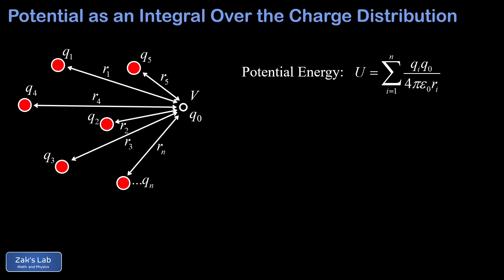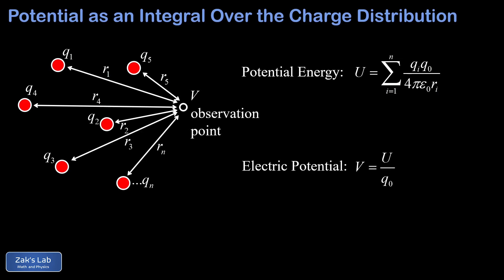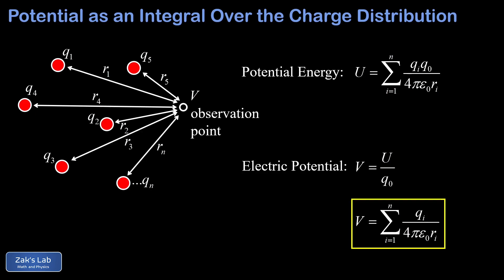To find the potential we just divide by q-naught again. Note that q-naught vanished and now we're computing the potential V at an observation point. Dividing q-naught out of that sum, we arrive at the potential near a collection of n point charges: the sum of qi over 4πε₀ri, where qi is the charge on the ith particle and ri is the distance to the observation point. We simply find the potential due to each charge and add them all up.